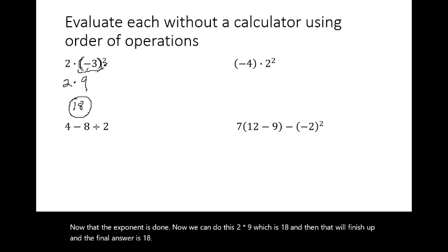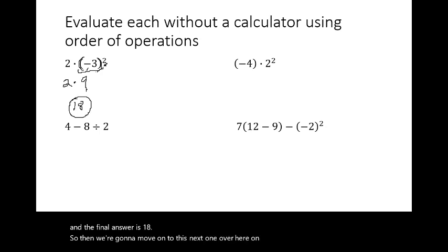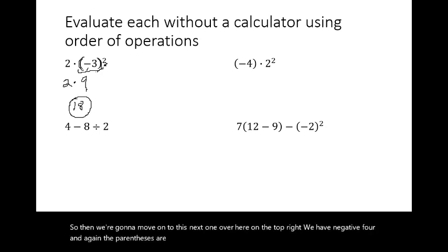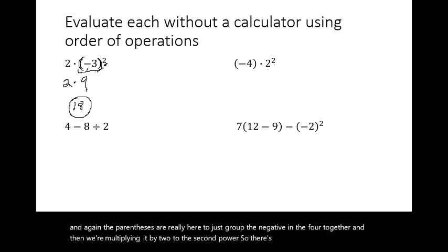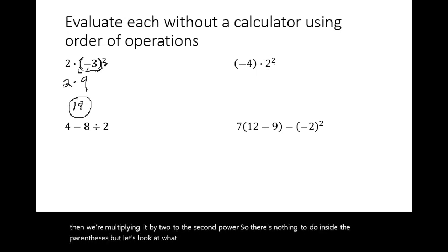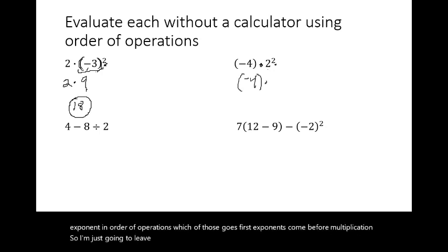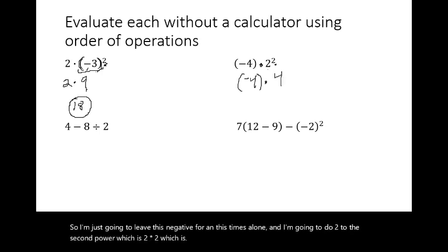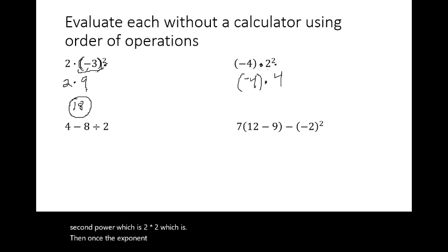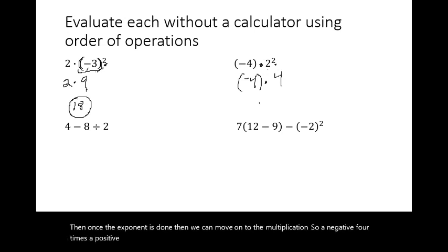For the next expression — negative four in parentheses times two to the second power: the parentheses just group the negative and four together, nothing to do inside them. We have multiplication and an exponent, and exponents come before multiplication. So we do two squared first, which is four. Then negative four times positive four: a negative times a positive is negative sixteen.